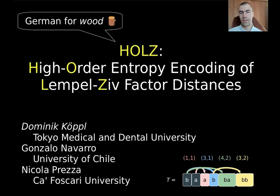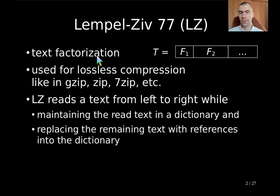In this talk we focus on the Lempel-Ziv 77 factorization and in particular on the distance representations. Let me briefly review what the Lempel-Ziv 77 or shortly LZ factorization is. It is a text factorization given your text T, it factorizes it into factors F1, F2 and so on. It is very popular and used for lossless data compression, so you can find it in programs like gzip, zip, 7zip and so on. The idea of LZ is that it reads the text from left to right while maintaining the read text in the dictionary and replacing the remaining text with references into this dictionary.